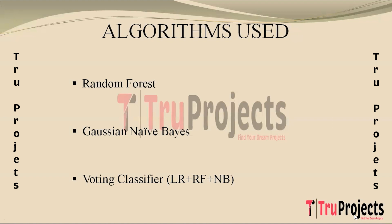The next algorithm is the Voting Classifier. It combines predictions from logistic regression, random forest and Naive Bayes models with majority voting. It leverages diverse model strengths to improve overall performance, reducing bias and variance. In this project, it is chosen for its ability to integrate various algorithms, enhancing cyber harassment detection on social media platforms through an ensemble approach.